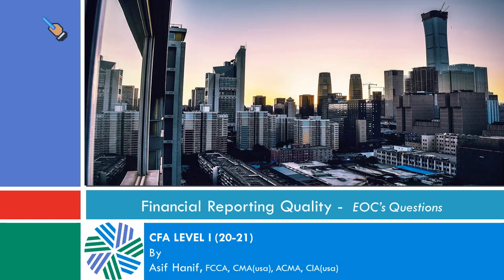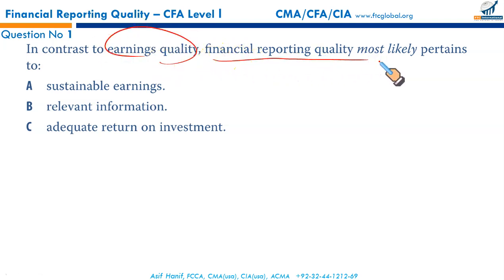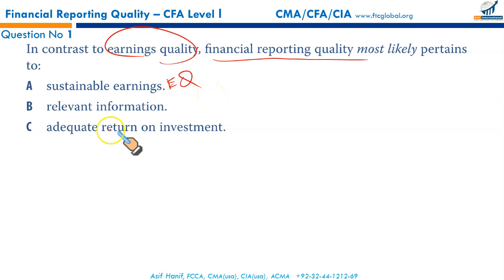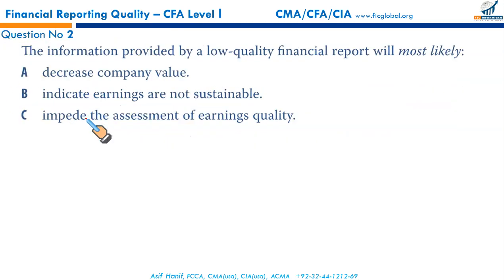Financial reporting quality — end of chapter questions from the curriculum. Question number one: in contrast to earning quality, financial reporting quality most likely pertains to what? Sustainable earnings? Adequate return on investment? Earning quality? When we say financial reporting quality, it is relevant information that has usefulness for the users. So this is an element of financial reporting quality, making B the correct option.